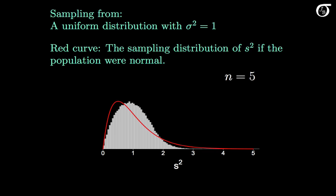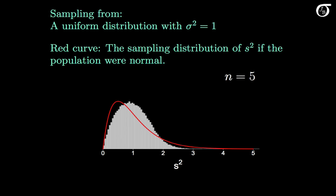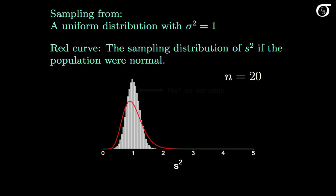The grey histogram represents 100,000 values of the sample variance when sampling 5 observations from the uniform distribution with sigma squared equal to 1. The red curve is the sampling distribution of the sample variance if we were sampling from a normally distributed population. We can see there doesn't appear to be as much skewness, and there aren't quite as many extreme values. When we increase the sample size to 20, we can see more clearly that the sampling distribution of s squared is not as variable as when sampling from a normally distributed population, because the uniform distribution doesn't result in extreme values.